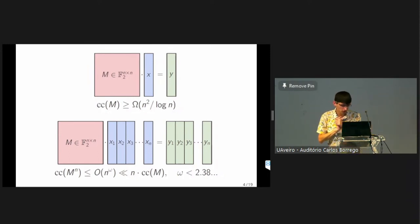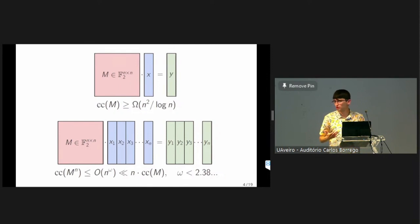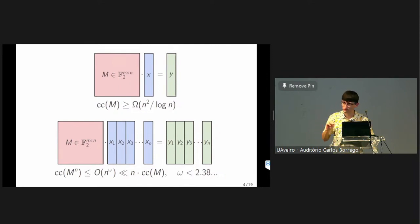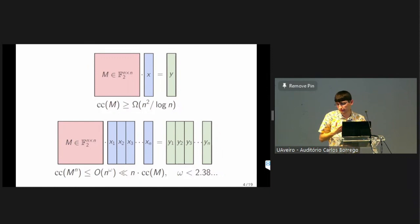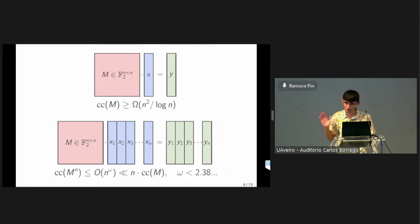This is a really nice example, but you might be left with the impression that these sorts of mass production phenomena can only occur for really special functions like matrix multiplication that have a certain algebraic or combinatorial structure — that you need some sort of structure to get something like this.